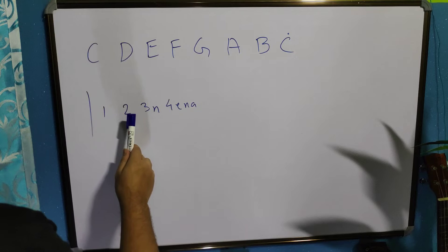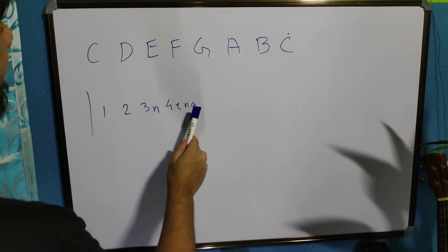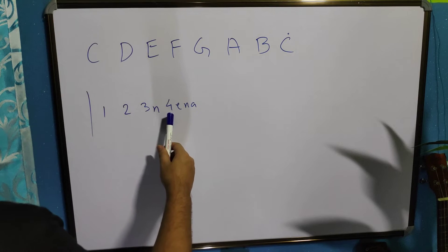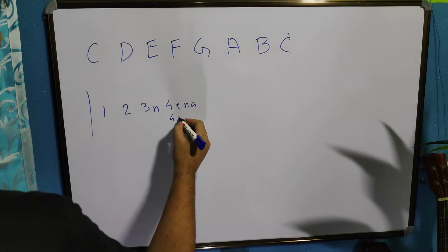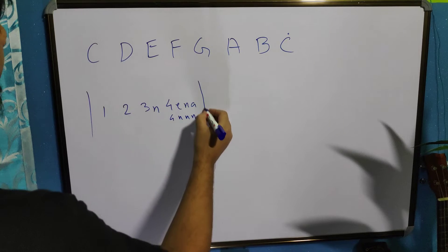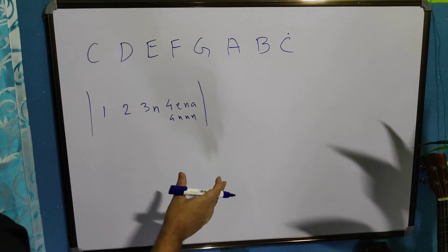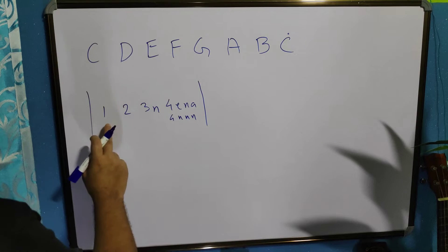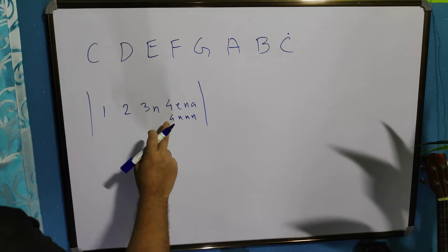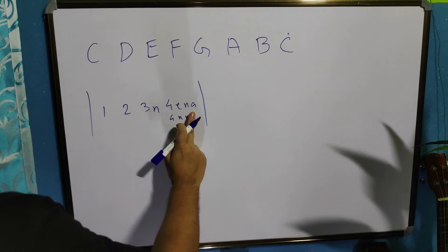So timing, one, two, three n, four e n a. Some people can call it four n n n. It doesn't matter. Whatever you say, it's just a semi quaver. Crochet, crochet, quaver, quaver. And there are four semi quavers.